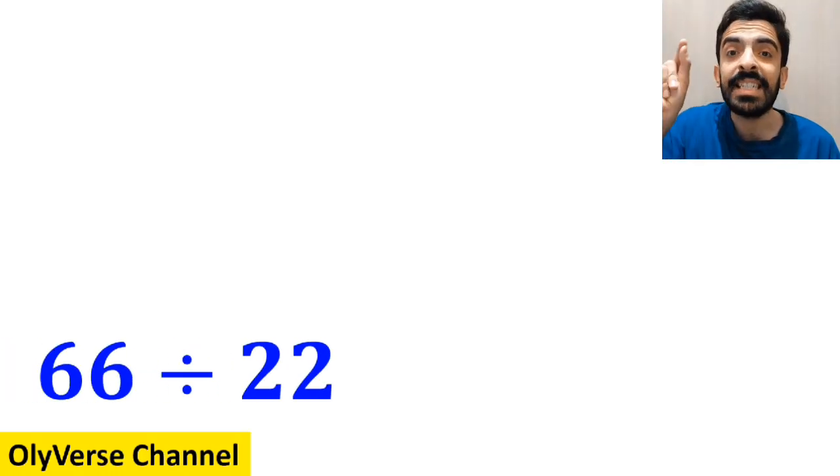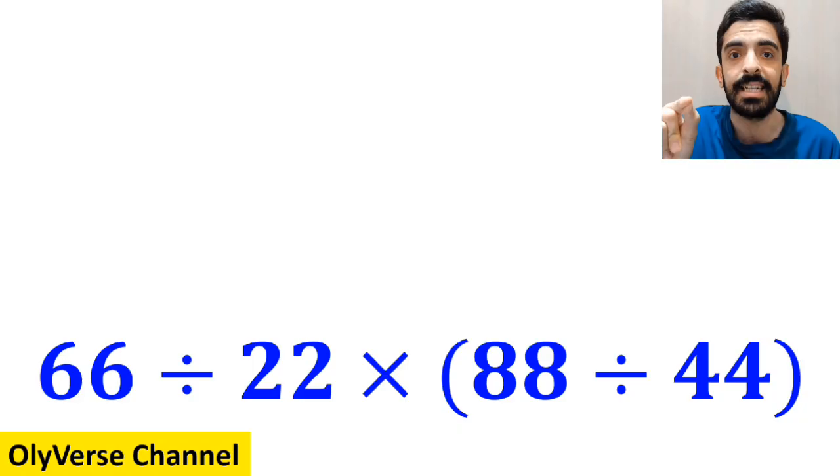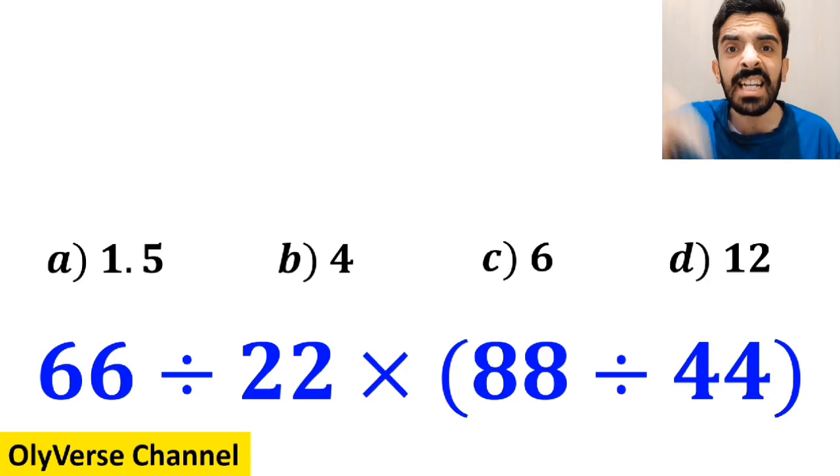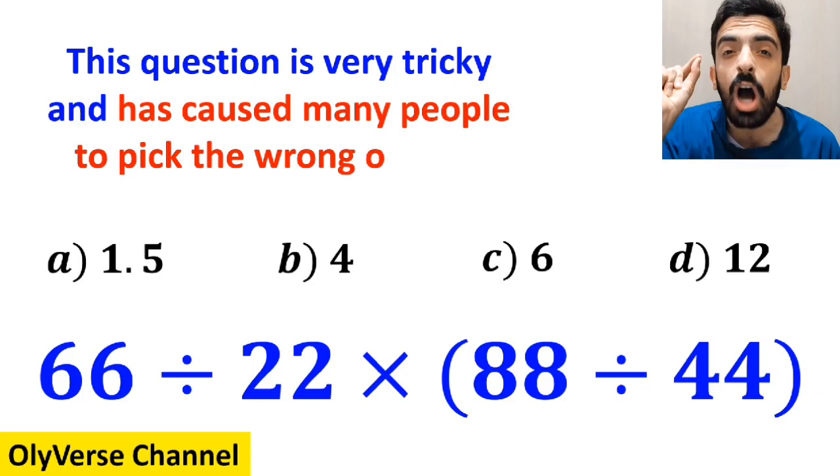What is the value of the expression 66 divided by 22 multiplied by (88 divided by 44)? Which option do you think is the correct answer to this question? This expression is very tricky and has caused many people to pick the wrong option.